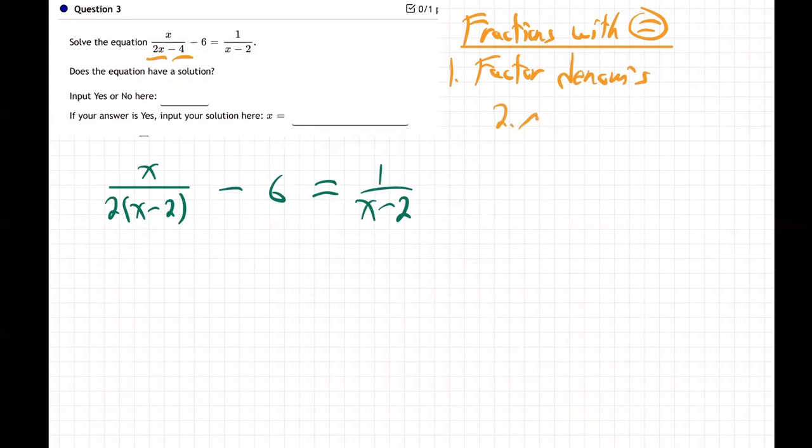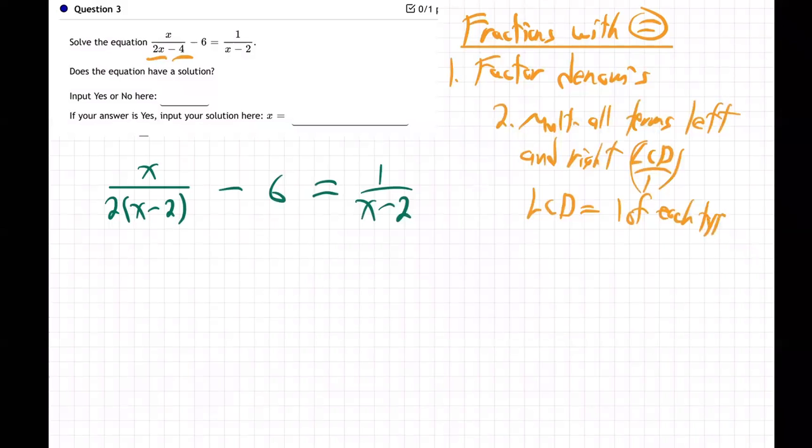Minus 6 equals 1 over x minus 2. Okay, that's the first step. Second step is to multiply all the terms, left and right, by the LCD over 1. And what is the LCD? One of each type of item under the bar. No repeats. We cannot repeat items down there. So what do we have under the bar? We have a 2 and an x minus 2 and an x minus 2. So I'm just going to take a single 2 and an x minus 2.